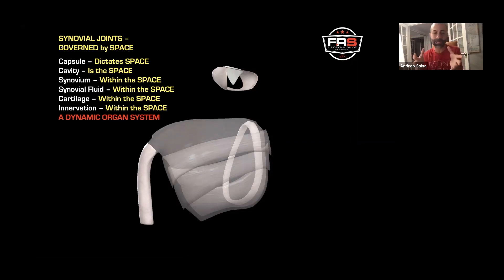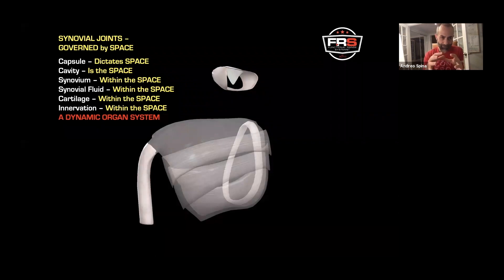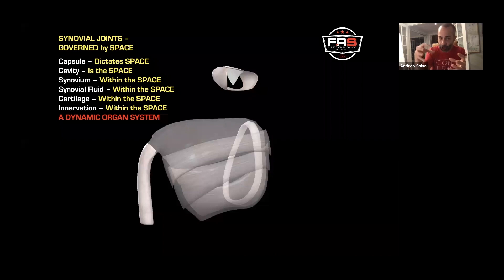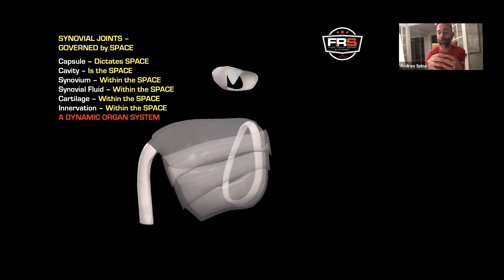So you have the capsule dictating the space. You have the cavity, the synovium, the synovial fluid, the cartilage, the innervation — all within the space. And this space is a dynamic organ system, which, by the way, is privy to entropy.